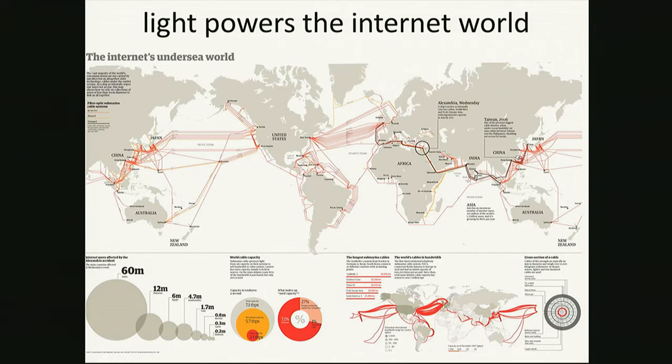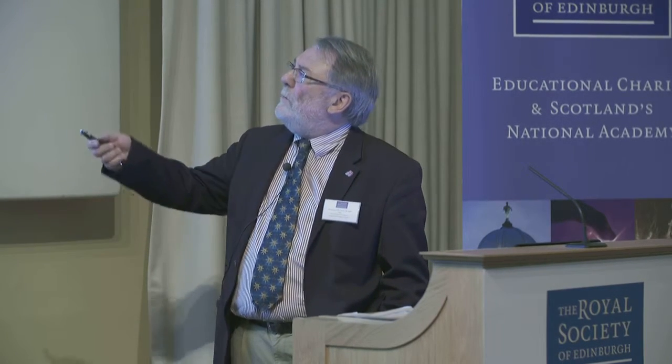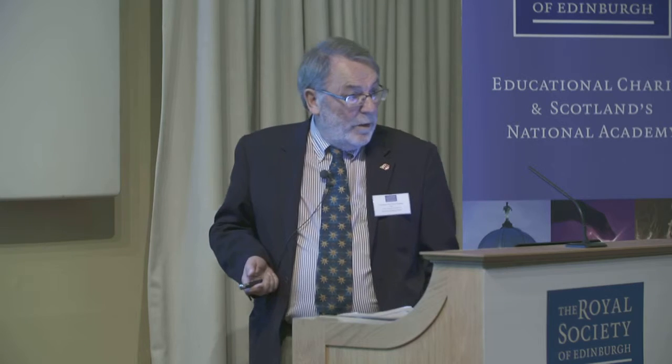If you think about it, light absolutely powers our world today. The way that we communicate, do business, entertain ourselves, is because electromagnetic waves whiz around the world, down optical fibers — these are the fiber links that connect the world together. They follow pretty much the old routes of the cable system of Kelvin's. Broadband is possible because of light.